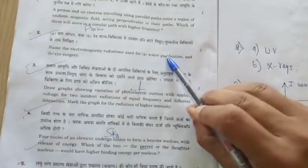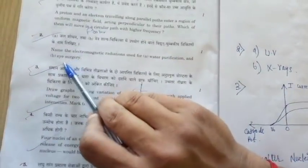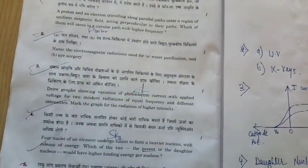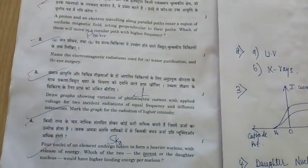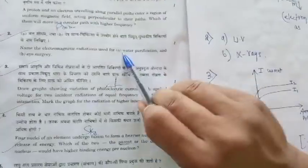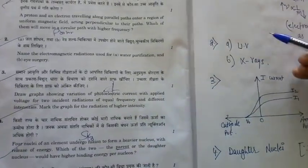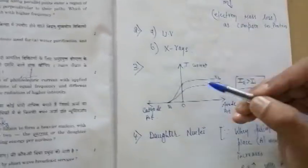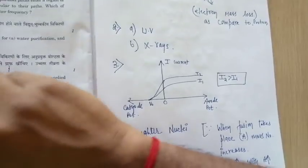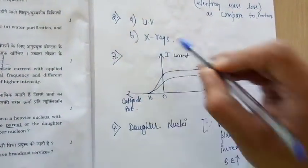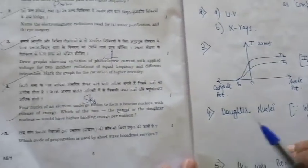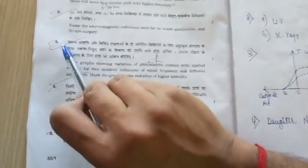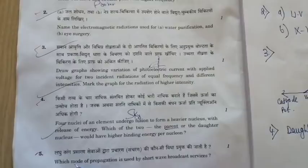Question 2: name the electromagnetic radiations used for water purification and for eye surgery. For water purification we use UV rays, and for eye surgery we use X-rays.